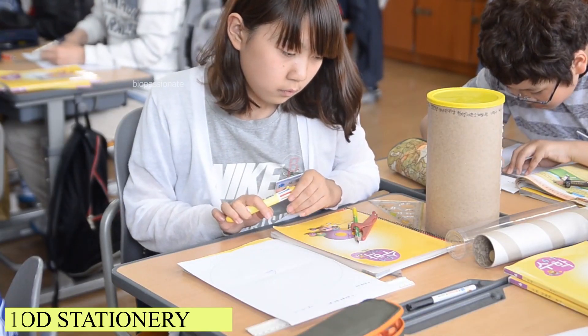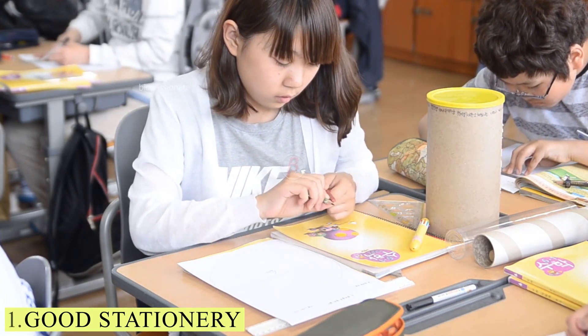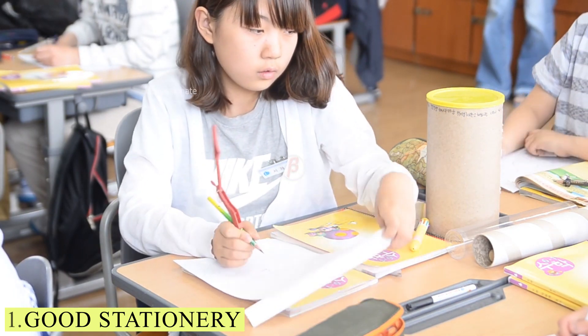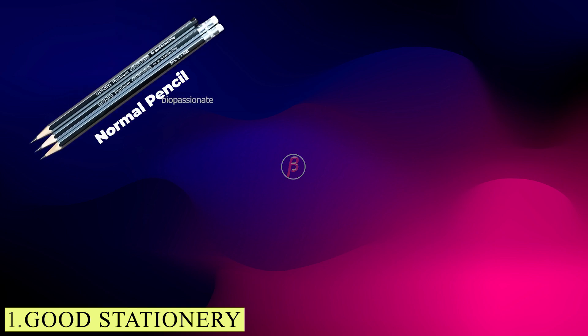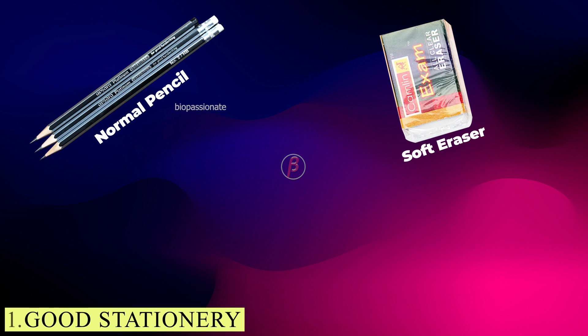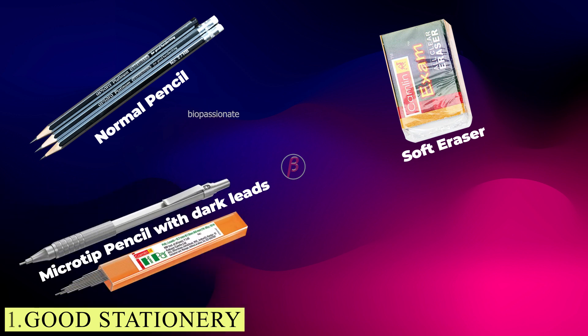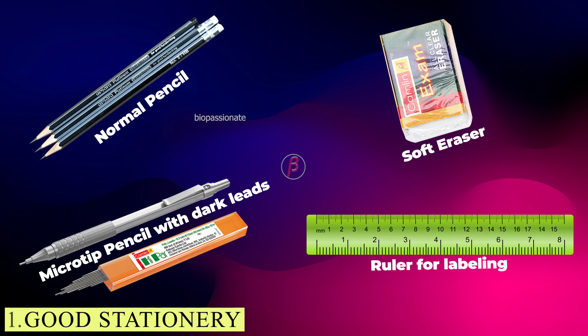Rule No. 1: We should have good stationery, like a normal 2HB pencil for light shading that should be dark, a smooth and soft eraser, a microtip pencil - I suggest dark Camlin - and a scale for labeling.